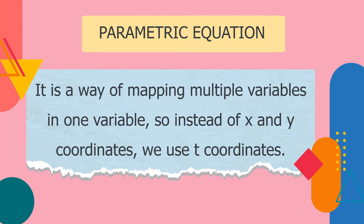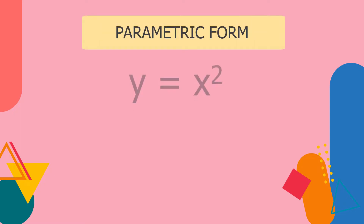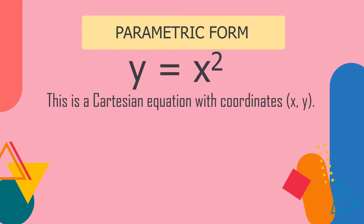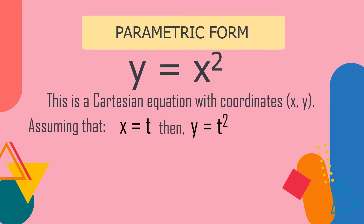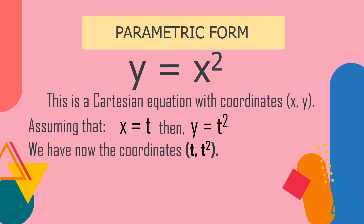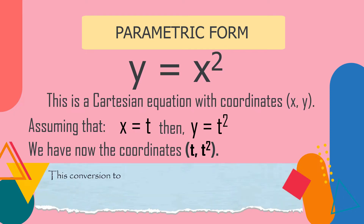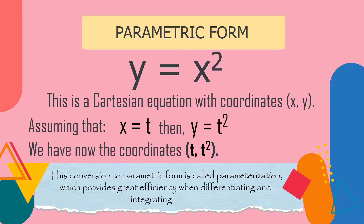we use t coordinates. To further understand what a parametric equation is, let's study this parametric form. For example, y = x² is a Cartesian equation with coordinates x and y. Assuming x = t, then y = t². We now have coordinates of t and t². This conversion to parametric form is called parameterization, which provides great efficiency when differentiating and integrating curves.